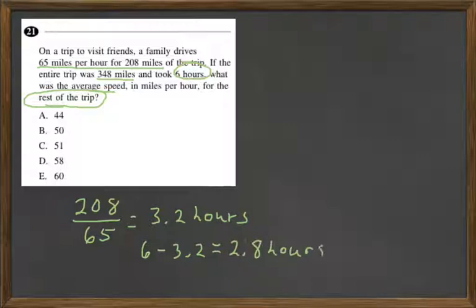And that's how long it took them to do that last stretch. Well, that last stretch was 348, the total, minus what we already went, which was 208. So 140. So we have 140 miles remaining, and we did that in 2.8 hours.